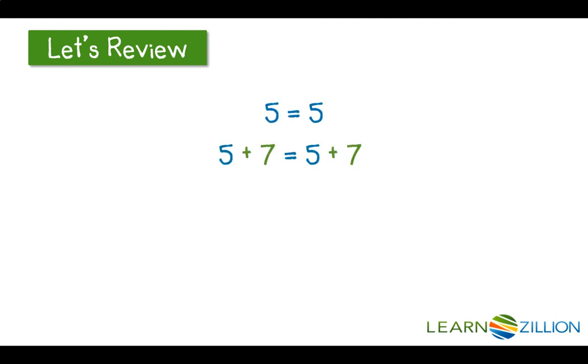This is also the same for positive numbers. If 5 equals 5 and we add the exact same number on both sides of that equality symbol, then we get 12 equals 12. Again, because we're performing the same operation on both sides of that equality, we still maintain equivalency.